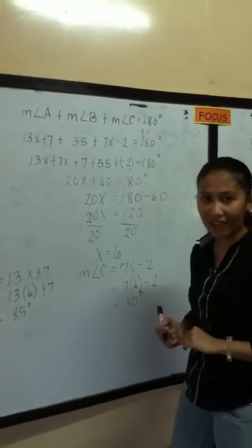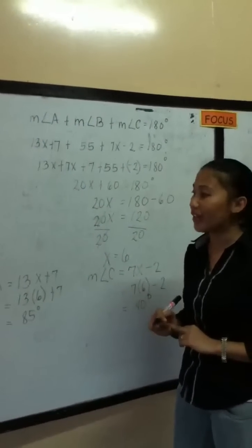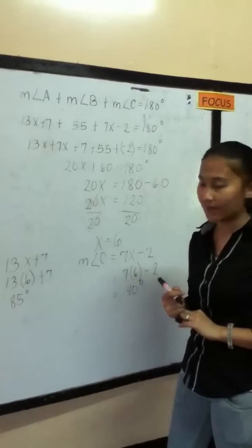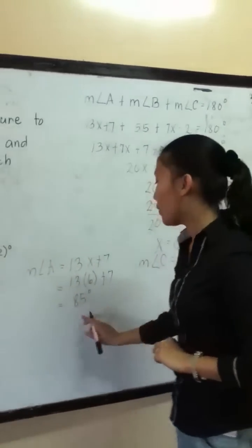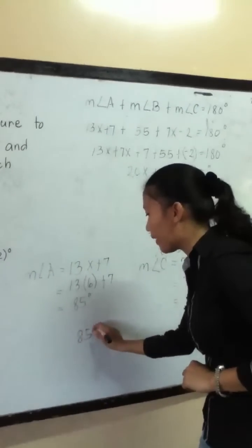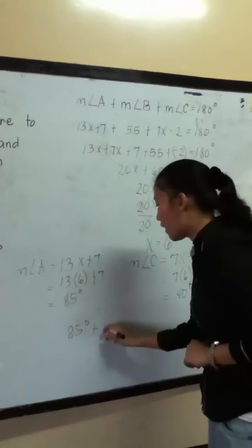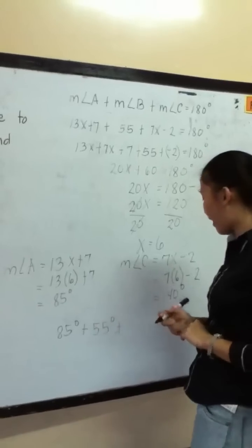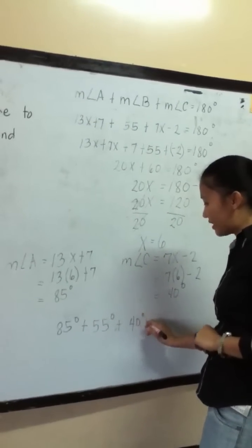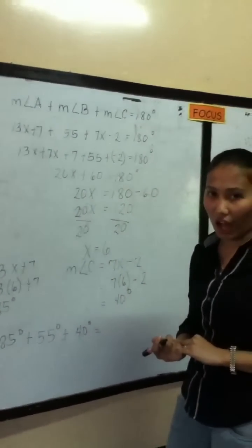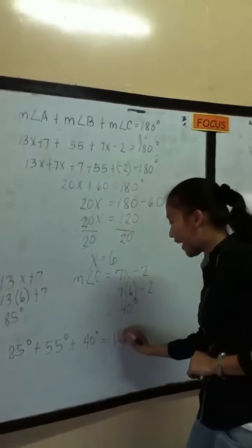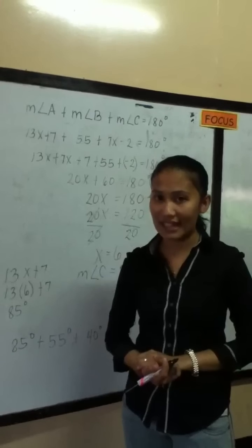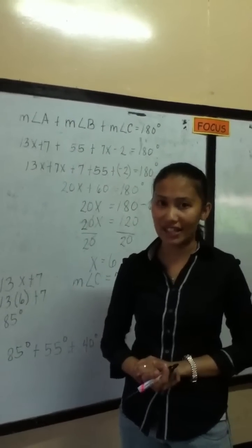Now that we have all three angle measures, we can verify the total. Angle A is 85 degrees, plus angle B which is 55 degrees, plus angle C which is 40 degrees, giving us a total of 180 degrees. That's how we find the value of x and the measure of each angle in a triangle.